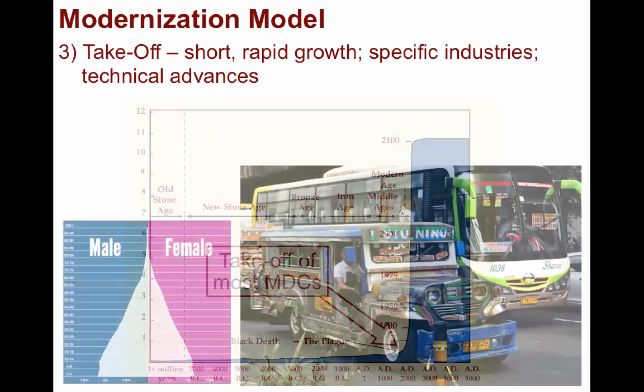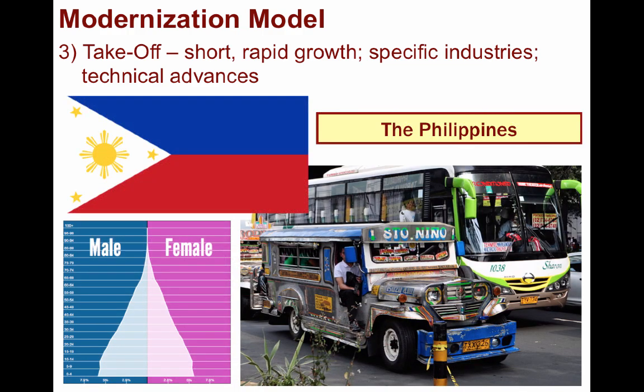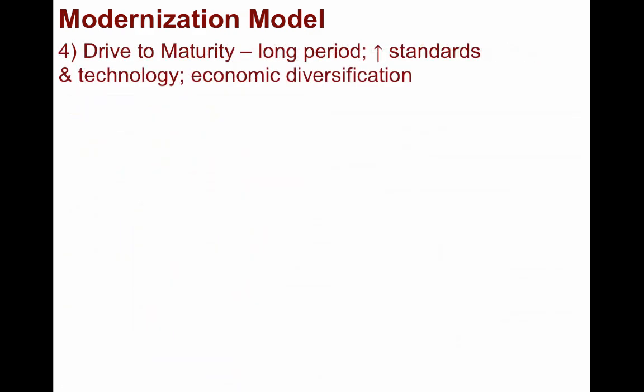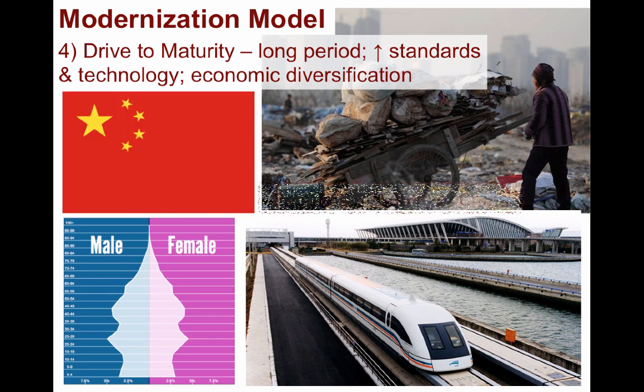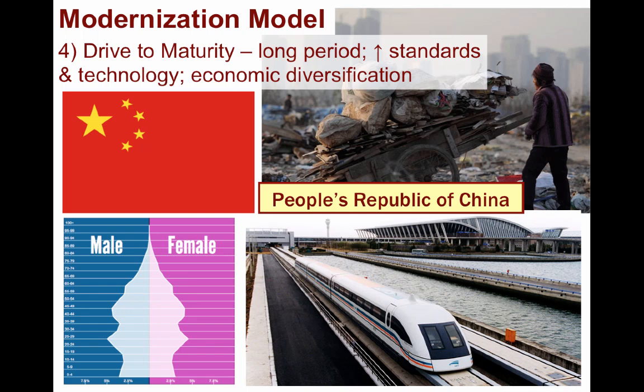Countries in the takeoff stage include the Tiger Cubs, such as the Philippines. After the relatively short takeoff stage, the drive to maturity is a long and sustained period as technological and societal modernization spreads from a few centers to the rest of the country. Economic diversification allows the country to produce many goods that were previously imported, and their international presence continues to expand. Many of the BRICS countries are in this stage, such as the People's Republic of China, which has many modern and productive cities, yet still possesses many interior places that lag behind in health, wealth, and education.